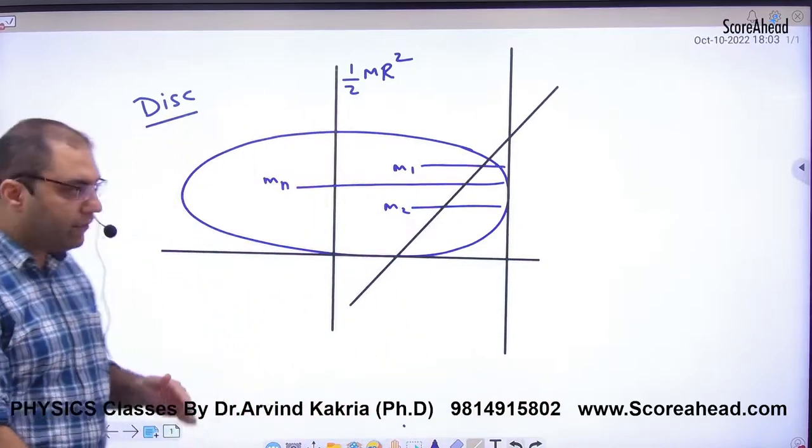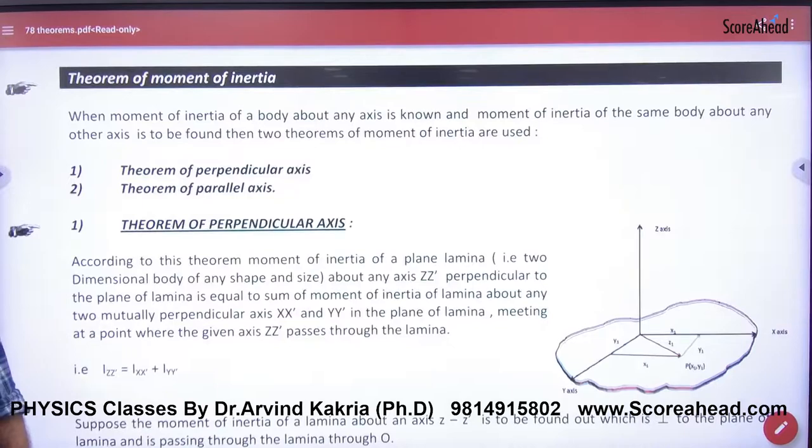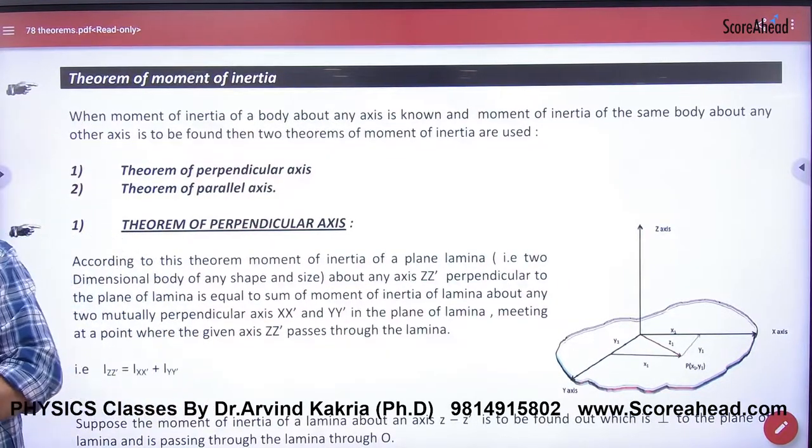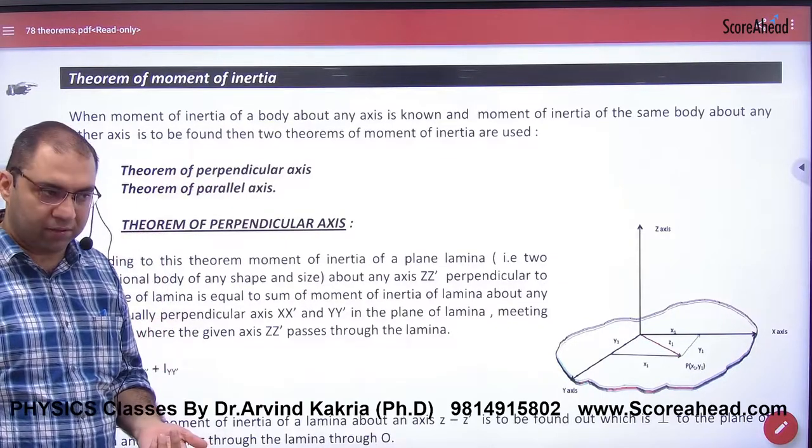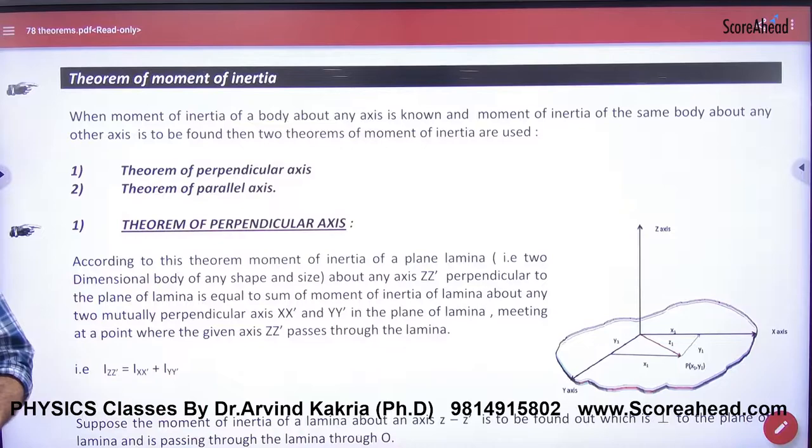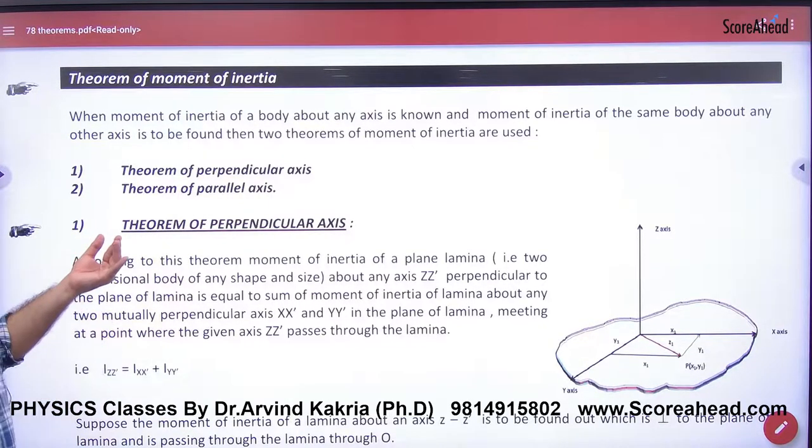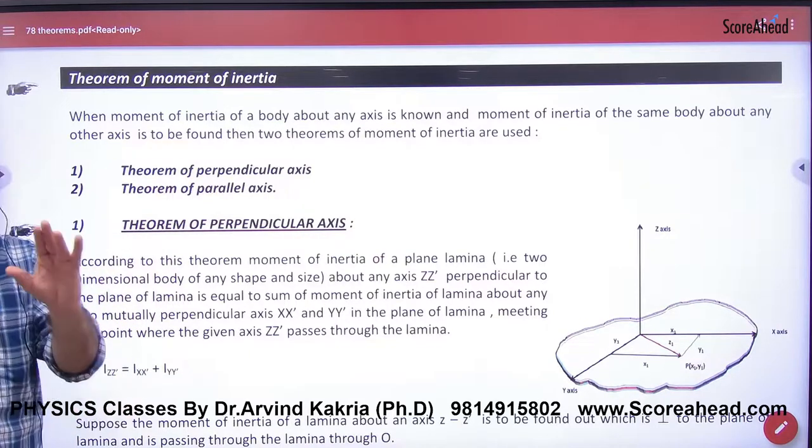So what are the shortcuts? Actually, they are theorems in physics. There are two theorems of moment of inertia. The first is the theorem of perpendicular axis, and the second is the theorem of parallel axis. What are we going to do today? We will work on these two theorems. We will look at their proofs and applications.